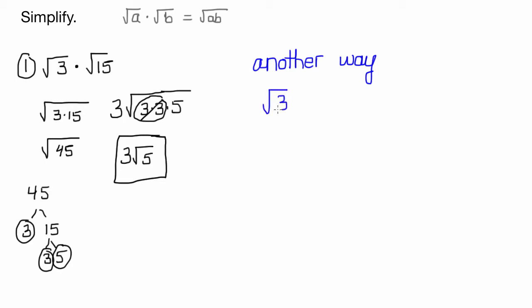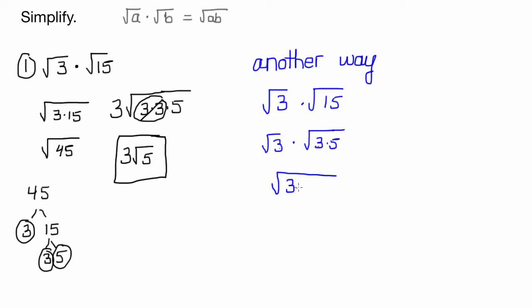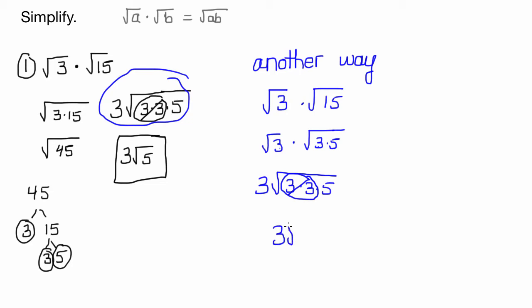What if I just saw square root of 3 times the square root of 15, and instead made sure they were both already written as products of their prime factors? The square root of 3 isn't going to change, but the square root of 15 is 3 times 5. So instead of going to 45, I just multiply them together: 3 times 3 times 5. For every pair, circle it, cross it out, bring one outside — the answer is 3 root 5.